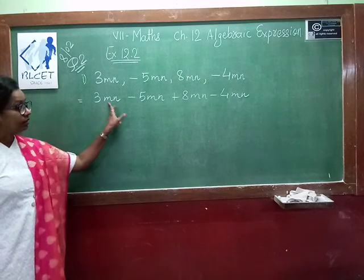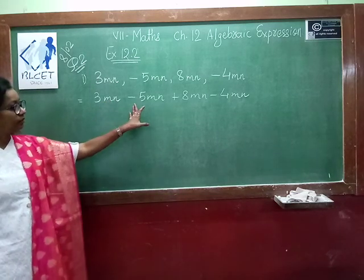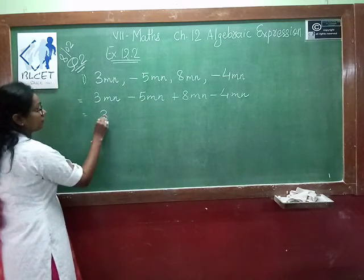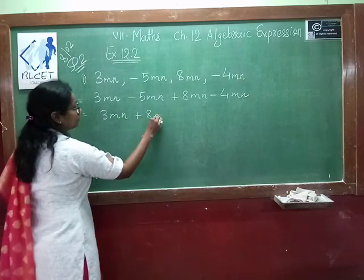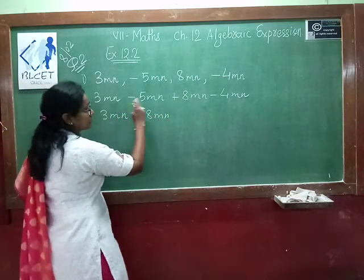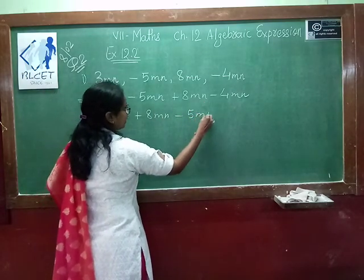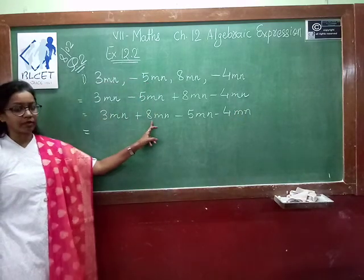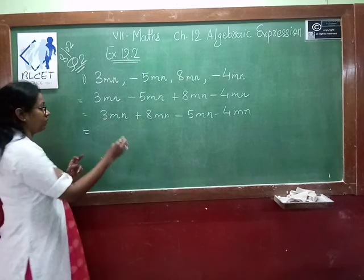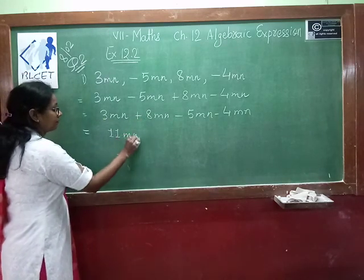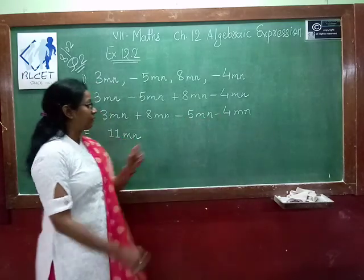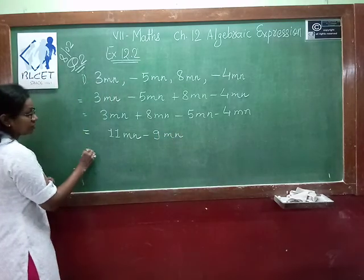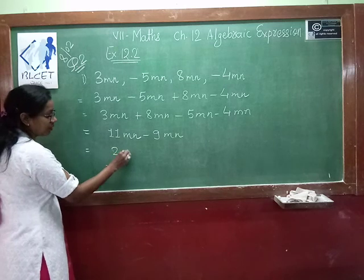We club the positive and negative terms. We know 3 and 8 are both positive terms, so we write them together: 3mn plus 8mn. Then minus 5mn minus 4mn, we write them together. First do the addition: 3 plus 8 gives 11mn. Then minus 5 minus 4 gives minus 9mn. So 11 minus 9 is 2mn.